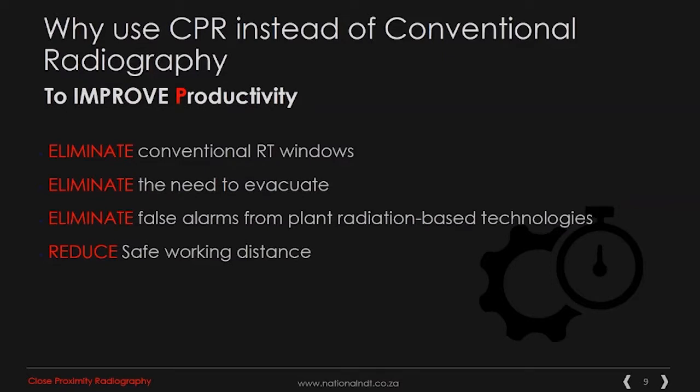Moving forward with the improvement of productivity, it allows you to eliminate the conventional RT windows as previously discussed. It eliminates the need to evacuate large areas of your plant or operating areas. It eliminates false alarms from plant radiation-based technologies — i.e., level switches — which can interfere with standard production of plants whilst in operation. And it also reduces the safe working distance.